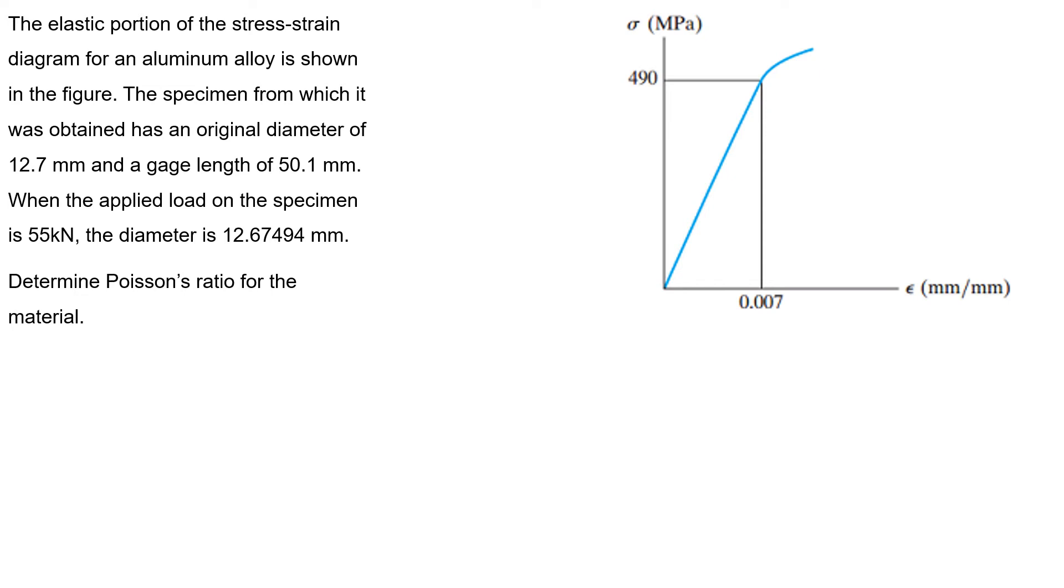Hello guys, this is the last problem of homework 5. The elastic portion of the stress-strain diagram for an aluminum alloy is shown in the figure. The specimen from which it was obtained has an original diameter of 12.7 mm and a gauge length of 50.1 mm.